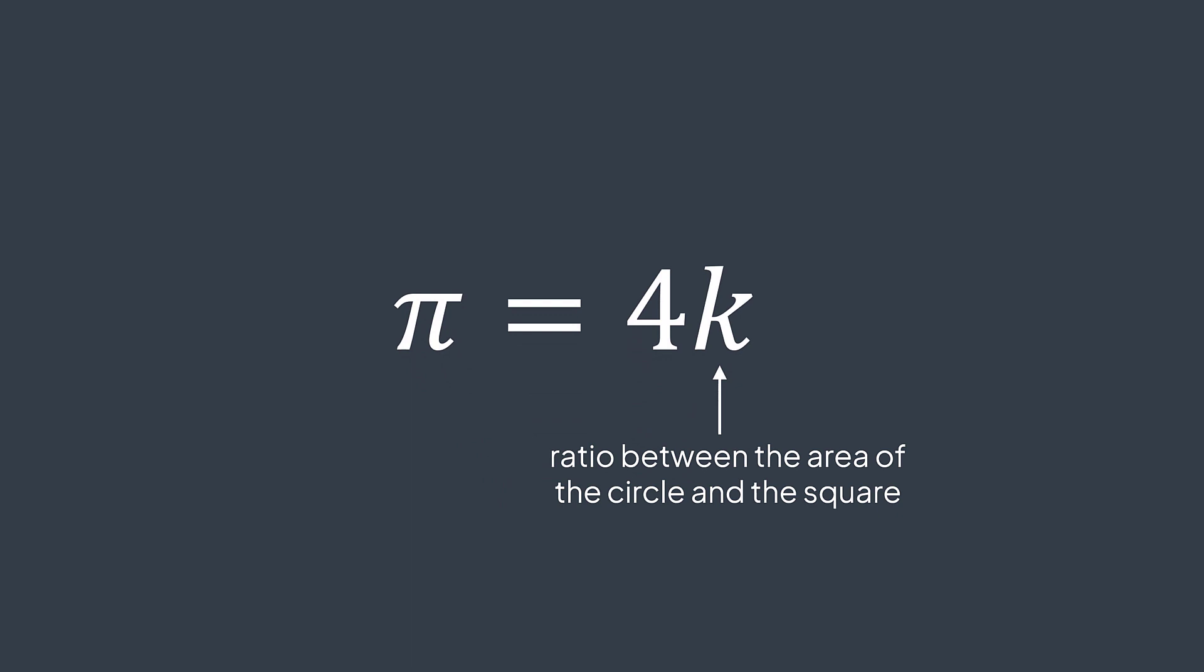It means that if we can get the value of K, we just need to multiply it by four to get the value of Pi, what we're searching for since the beginning. But the big question is, how to get the value of K? And this is where the randomized part comes in.